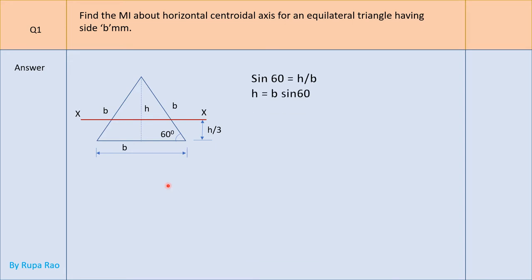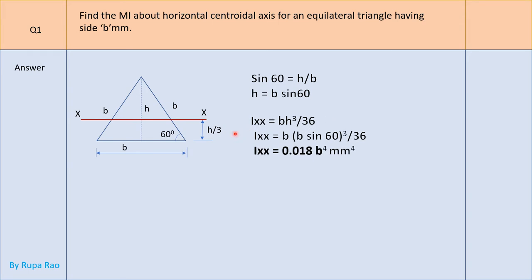For the equilateral triangle, all three angles are 60 degrees. Considering half the triangle, sin 60 = H/B, so the height H = B × sin 60. The formula for Ixx for a triangle is BH³/36. Substituting H = B sin 60, we get Ixx = B × (B sin 60)³ / 36.